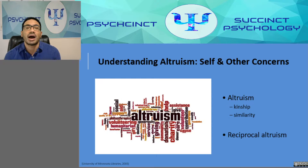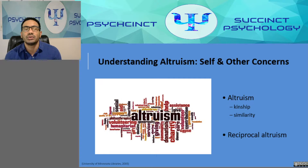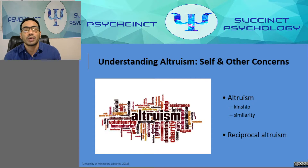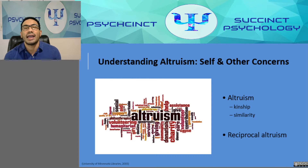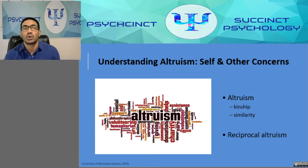Helping is strongly influenced by affective variables. The parts of the brain most involved in empathy, altruism, and helping are the amygdala and the prefrontal cortex — the areas responsible for emotion and emotion regulation.